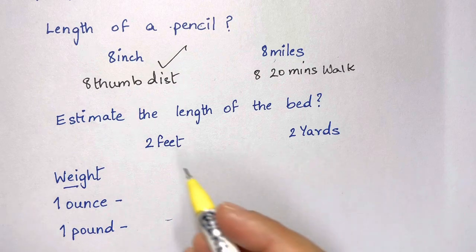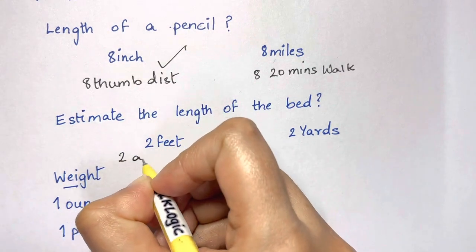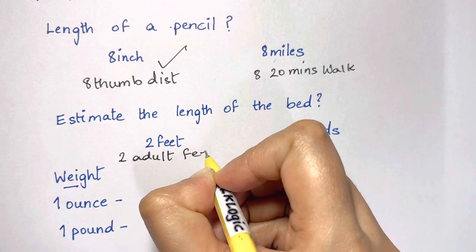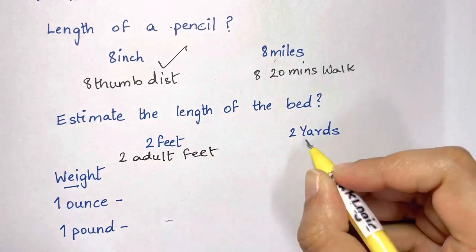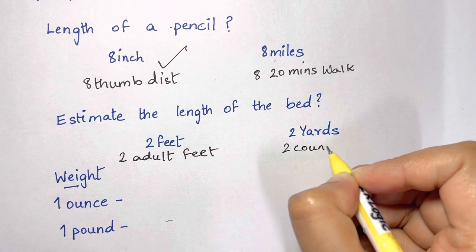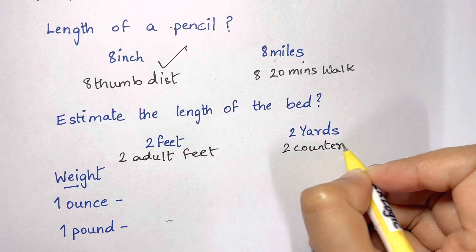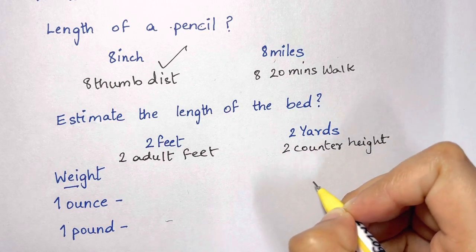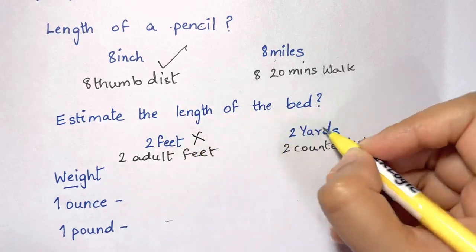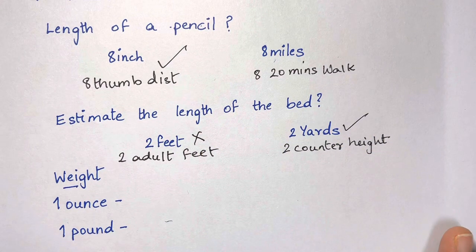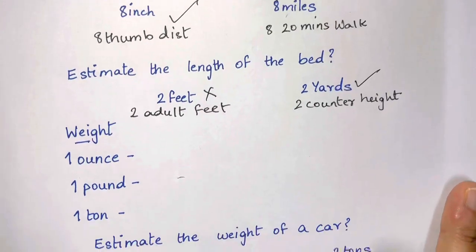Let's estimate the length of a bed — is it two feet or two yards? Two feet is like two adult feet, and two yards is two counter heights. So the better estimate is two yards — two counter heights.